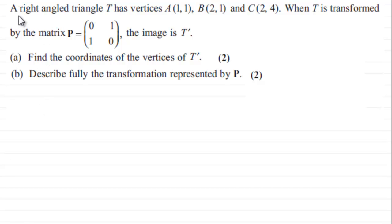Okay, welcome back if you had a go. So what we've got then is a right angle triangle T has vertices A(1,1), B(2,1), and C(2,4). When T is transformed by the matrix P which equals (0,1; 1,0), the image is T prime. In part a, we've got to find the coordinates of the vertices of T prime.